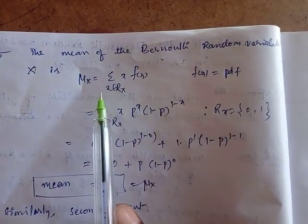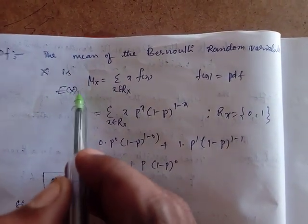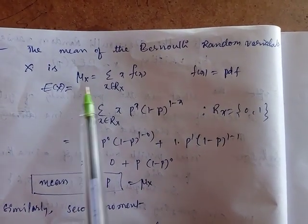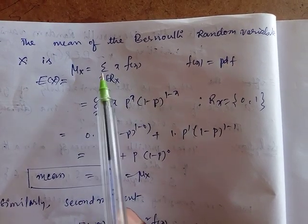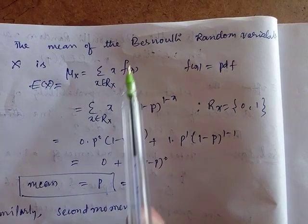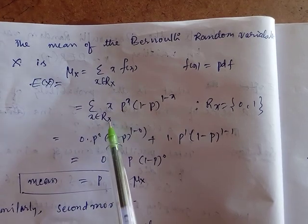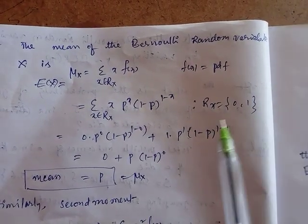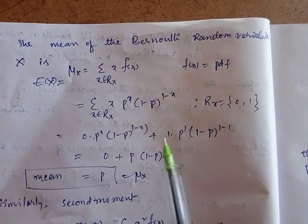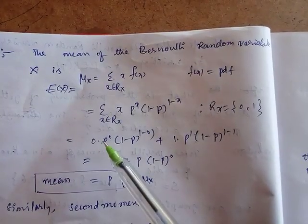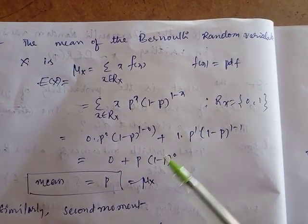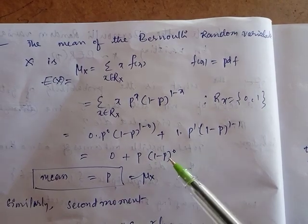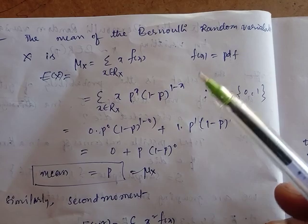The mean of the Bernoulli random variable X is μ_x = E(X) = Σ x · f(x) over the range space. Substituting f(x) = p^x · (1−p)^(1−x) for x = 0 and x = 1: when x=0, contribution is 0; when x=1, contribution is p. So the mean equals p. For the variance, we need the second moment E(X²) = Σ x² · f(x).